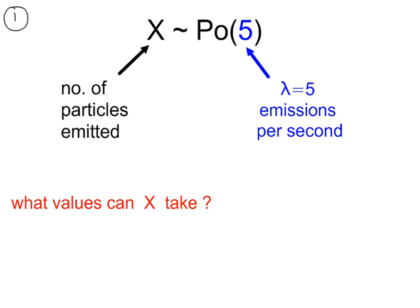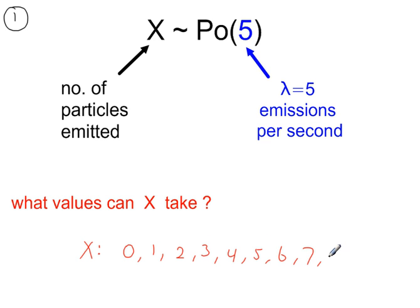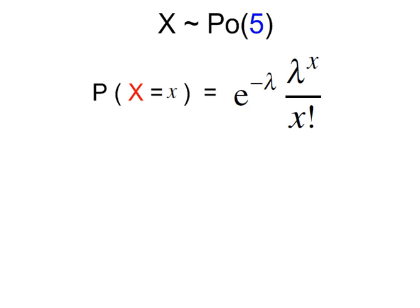Example 1. A radioactive substance is emitting particles at a mean rate of 5 per second. X represents the number of particles emitted. X can take the values 0, 1, 2, 3, 4, 5, 6, 7 — there is no upper limit to the Poisson distribution. The uppercase X is a discrete random variable, and the value it takes is represented by the lowercase x.